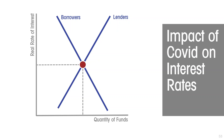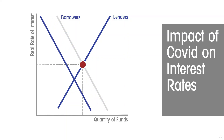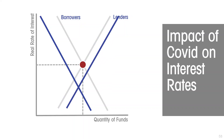We can illustrate this on our market for investable funds. Businesses will be reluctant to invest, so demand for investable funds falls; savers will want to increase their savings to provide for an uncertain future. The result of the demand curve shifting left and the supply curve shifting right is that interest rates fall.